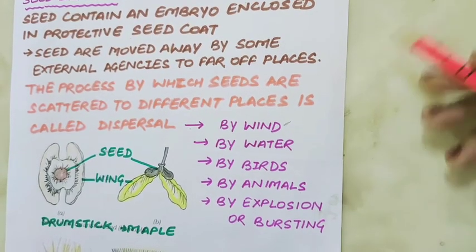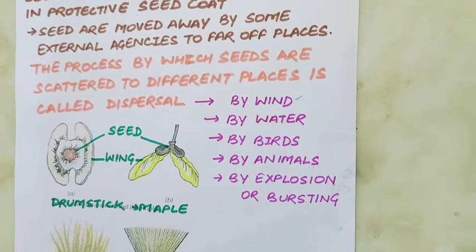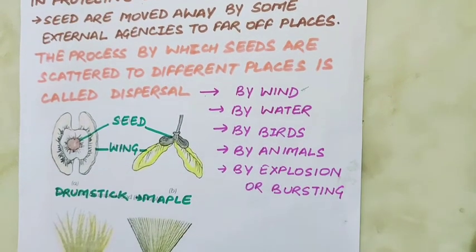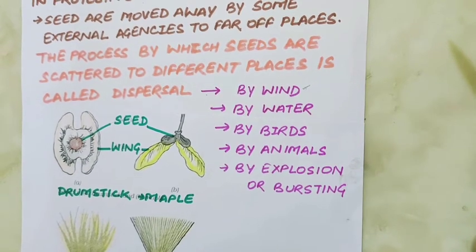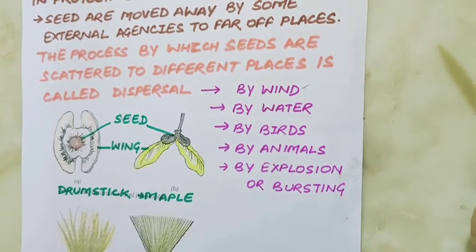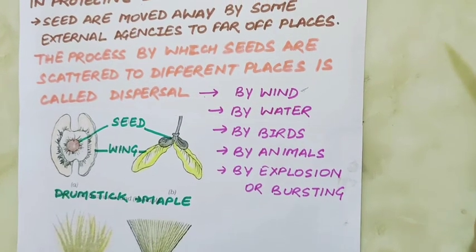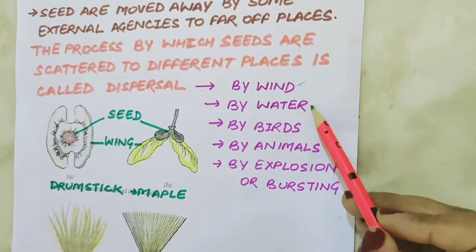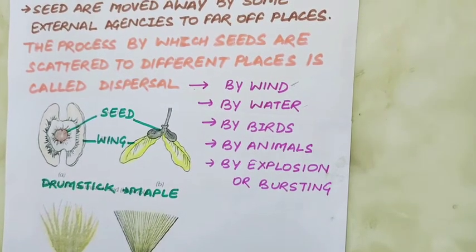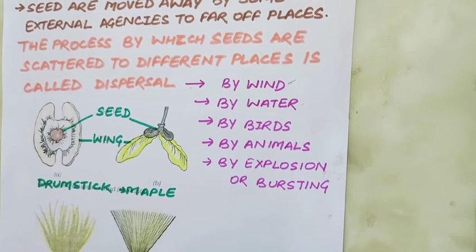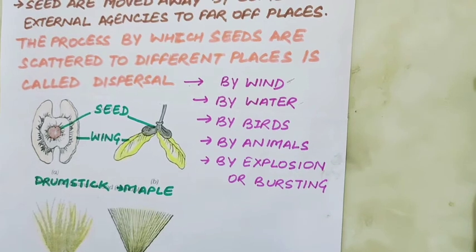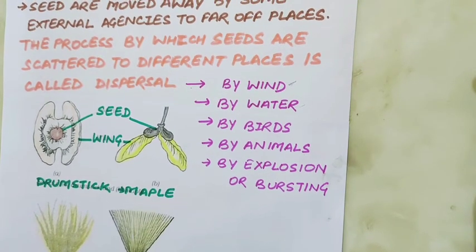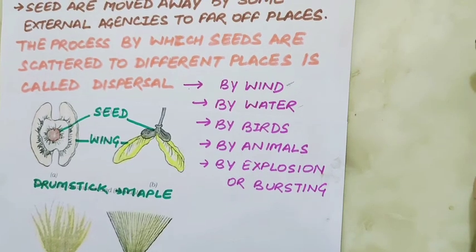Seed dispersal by wind occurs for seeds that are light and feathery. Seeds of some plants that have an outer fibrous or spongy covering are dispersed through water. They have the ability to float and drift along with the flow. For example, seeds of water lily, lotus, singhada, and coconut are dispersed through water. Some seeds are also dispersed by birds.